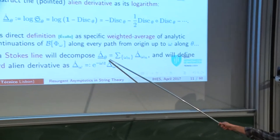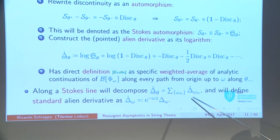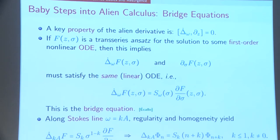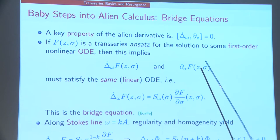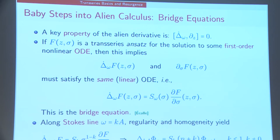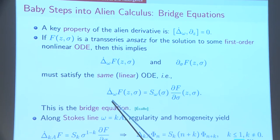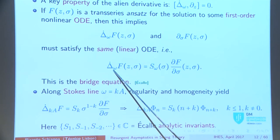Along the Stokes line we can decompose at all possible singularities and define the standard alien derivative at each singularity with the non-analytic term. A key property of this object is that it commutes with the standard derivative. So if our trans-series is an ansatz for the solution of a first-order nonlinear ODE, the alien derivative and the derivative with respect to the trans-series parameter satisfy the same linear ODE, meaning they must be proportional to each other. This is known as the bridge equation — a bridge between alien derivatives and standard derivatives.